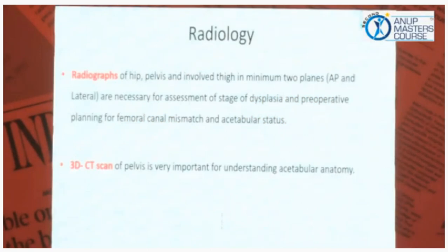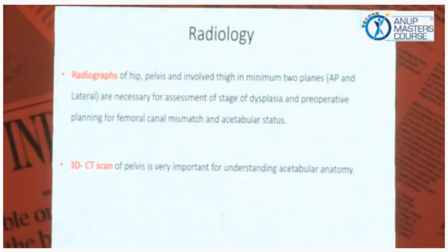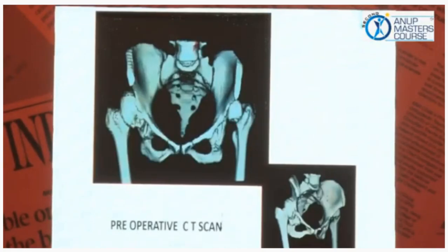Radiology: hip joint and pelvis involving the thigh — at least a minimum of two views, AP and lateral, are necessary to assess the stage of dysplasia, for preoperative planning for femoral canal mismatch, and acetabular status. Sometimes a few more radiographs are needed, but now 3D CT scan is very important in understanding the anatomy of the acetabulum. You can clearly see how much it is displaced.